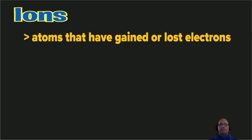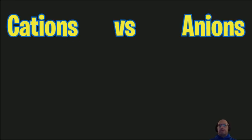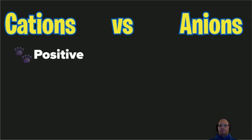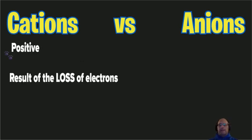Ions are atoms that have gained or lost electrons. When an atom gains or loses electrons we end up with two types of ions: one type where they gain electrons and another type where they lose. These two types are called cations or anions. Cations are positive — you can remember this because cats have paws — and cations are the result of a loss of electrons when the atom forms an ion.